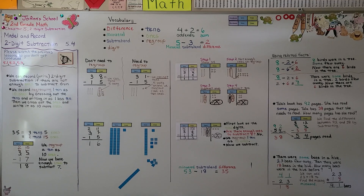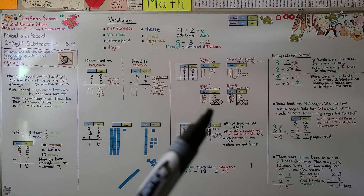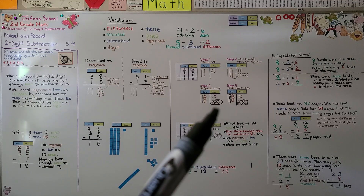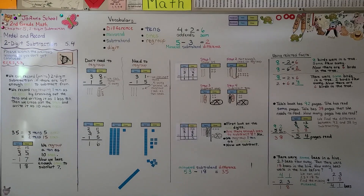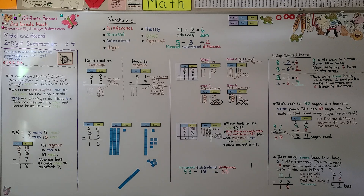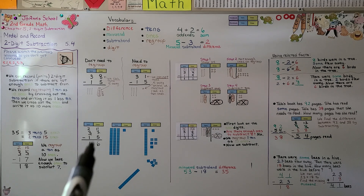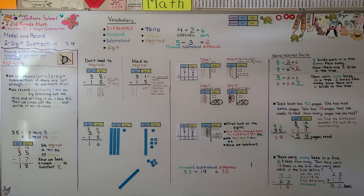Make sure you cross off the models that you need to cross off. When we subtract the ones, cross them off after we subtract. When we subtract the ten, cross off the ten so we count the right amount. In our next lesson, 5.5, we're going to do more two-digit subtraction with regrouping using the standard algorithm — crossing off tens and regrouping them to the ones place. I hope you'll join me there. Have a wonderful day.